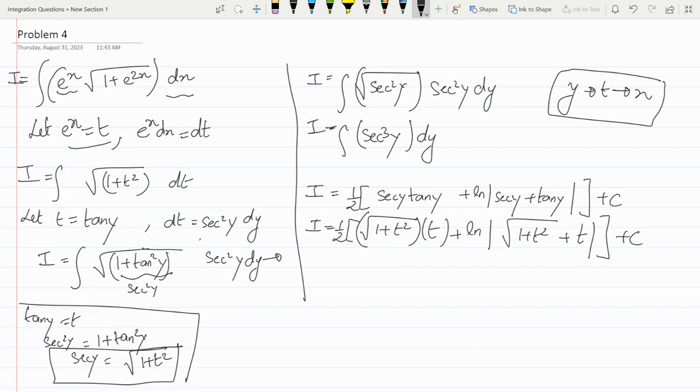Now t equals to e to the power x. We'll just substitute that. So I will become half square root of 1 plus e to the power 2x times e to the power x plus ln modulus of square root of 1 plus e to the power 2x plus e to the power x plus constant.